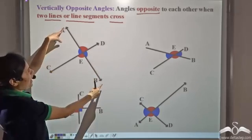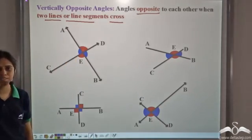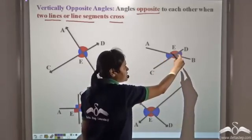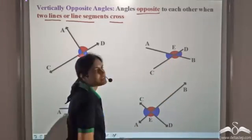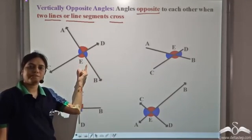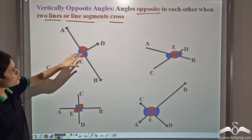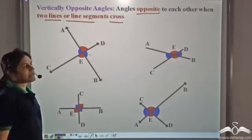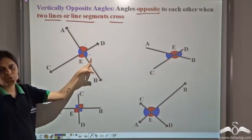Arm CD and AB form these two angles, but they are formed on the opposite sides. In this case also, arm AB and CD form these two angles but they are formed on the opposite sides. Of these four angles, you take any two angles — they will either be adjacent or be vertically opposite. So if I take this angle and this angle, we see that these are adjacent angles, so they are not vertically opposite angles.